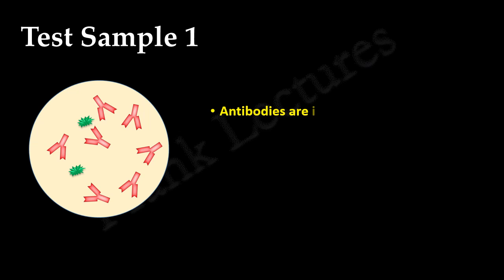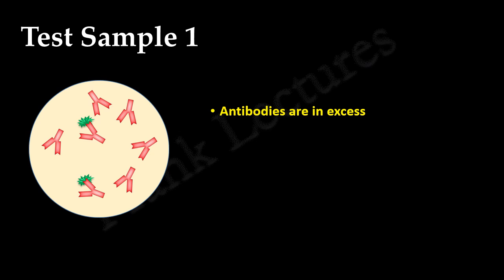As you can see here, in case of first test sample antibodies are in excess. Antigen combines with only one or two antibody molecules, and no cross linkages are formed. Many free antibodies are there, but antigens are insufficient. Thus, no lattice formation takes place.